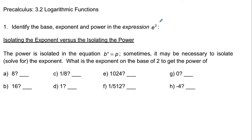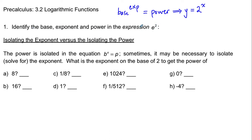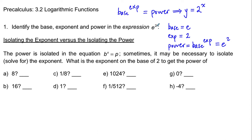The first thing we're going to do is recall that we have this naming system of a base raised to an exponent being equal to a power. We want to make sure that we're not calling the exponent the power, but rather the output of a base raised to an exponent is a power. So when we take a look at this expression e squared, it looks like there are only two things, but I'm asking for a base, an exponent, and a power. The base is e, the exponent is the small superscript number on the base, and the power is the entire quantity — e squared, the whole thing.